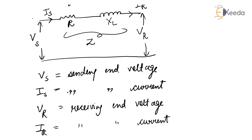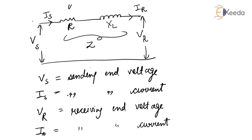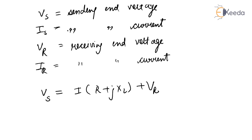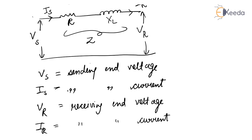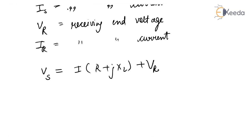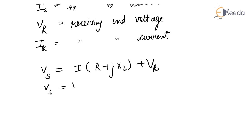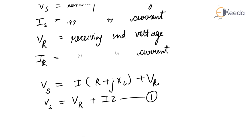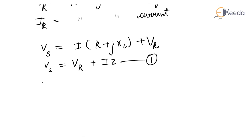By applying KVL in this circuit, with capacitive effect ignored, we get Vs equals Is times (R plus jXL) plus Vr, where R plus jXL equals Z. So Vs equals Vr plus IZ — this is equation one. By applying KCL, the sending end current equals the receiving end current: Is equals Ir — this is equation two.